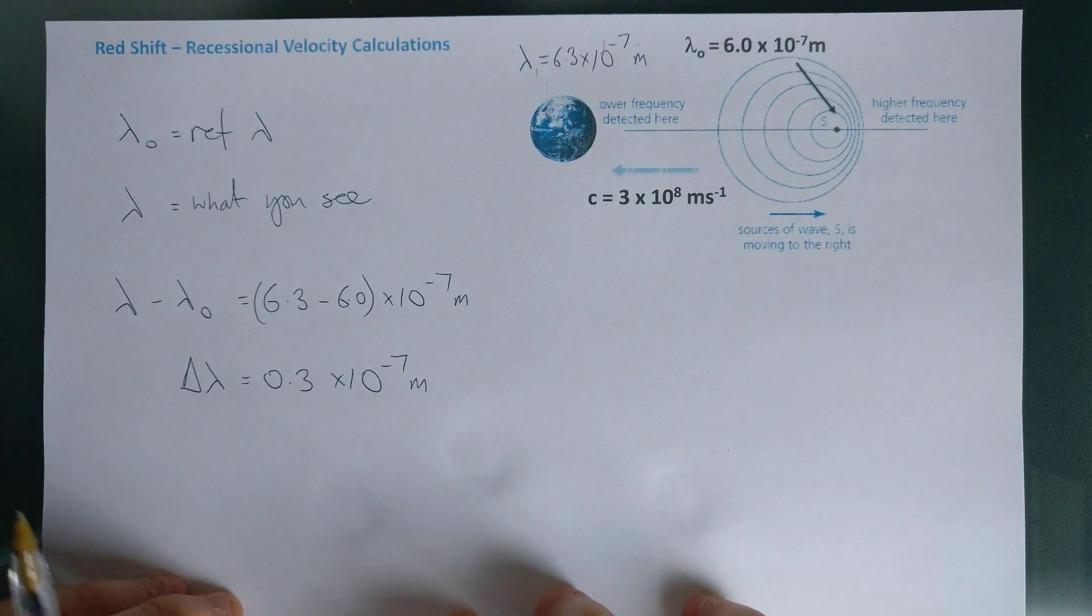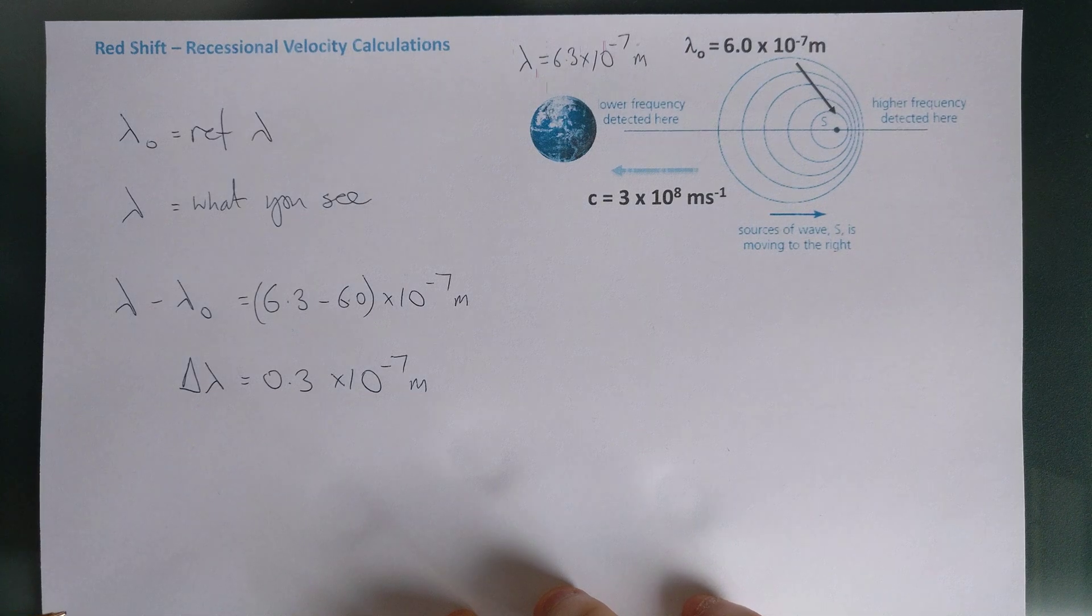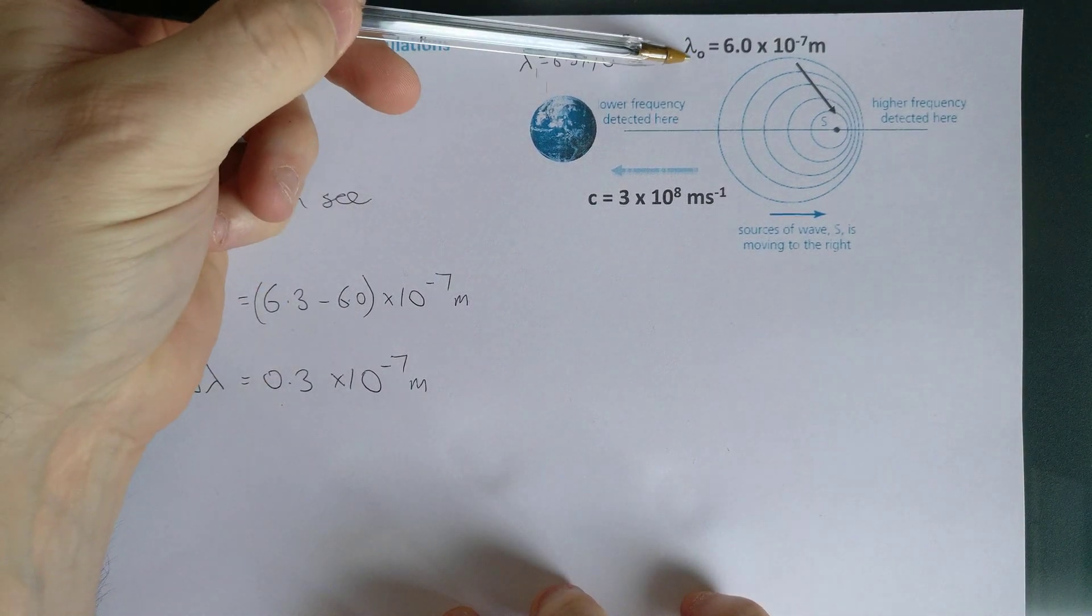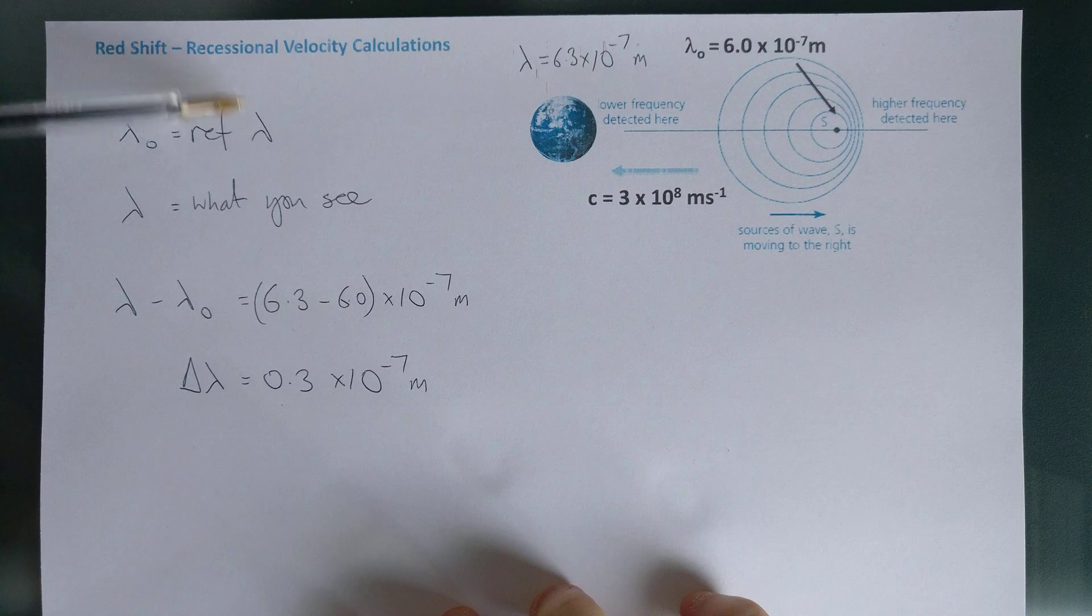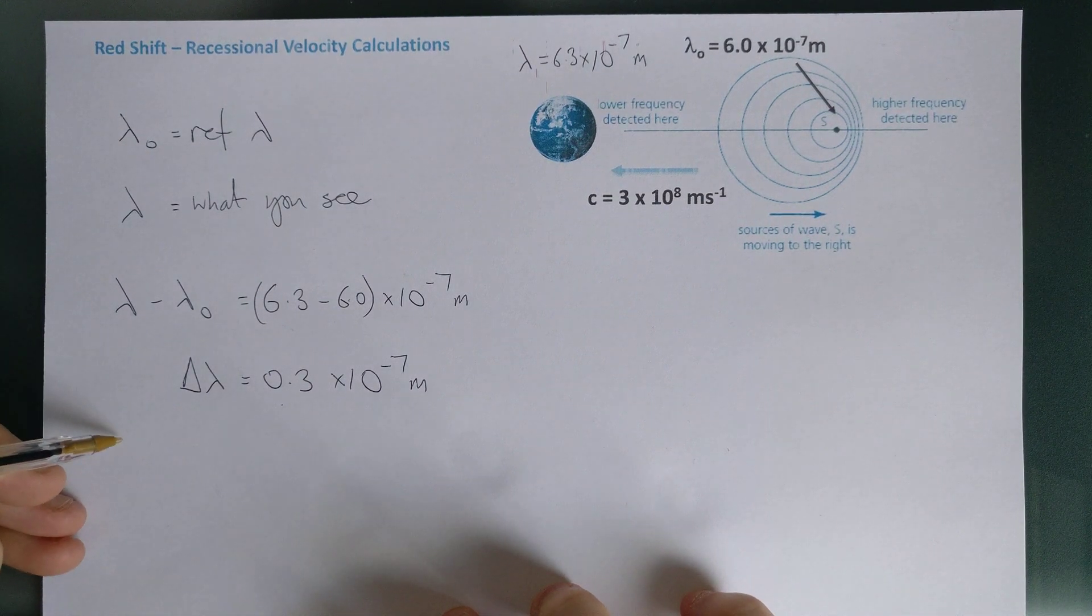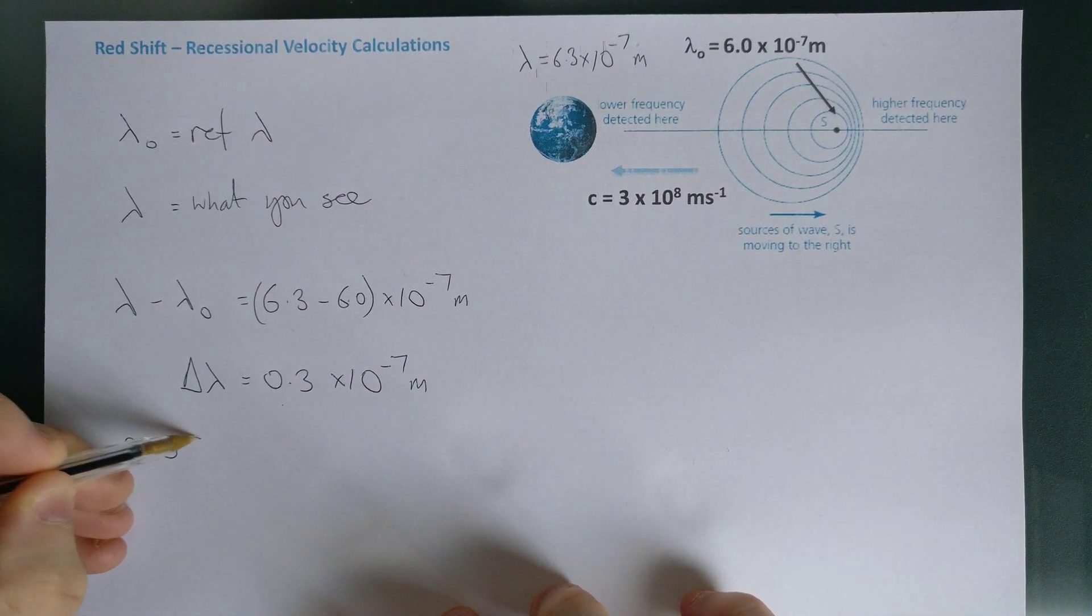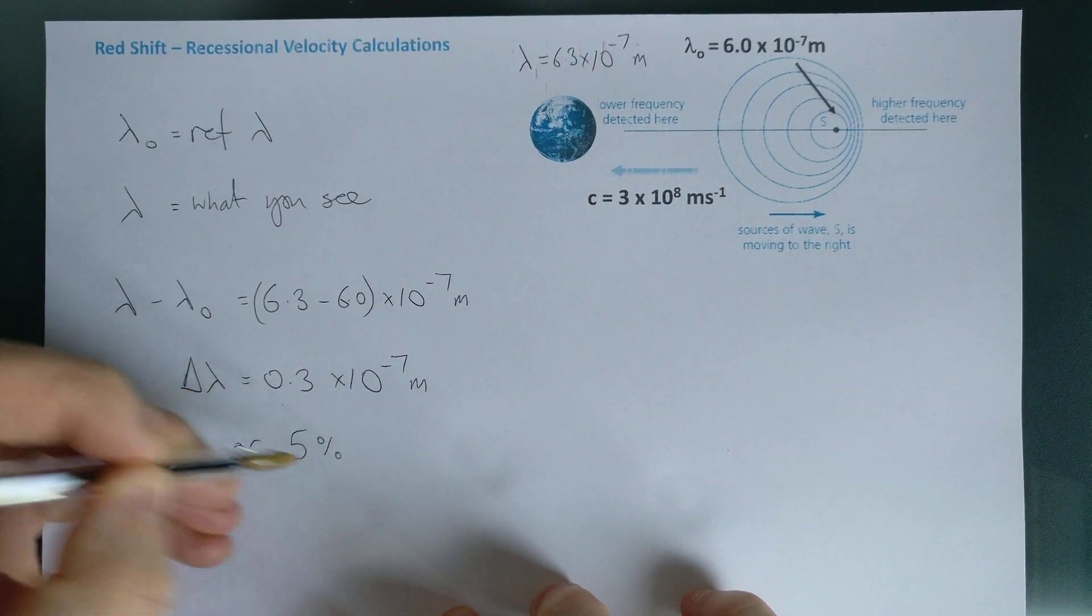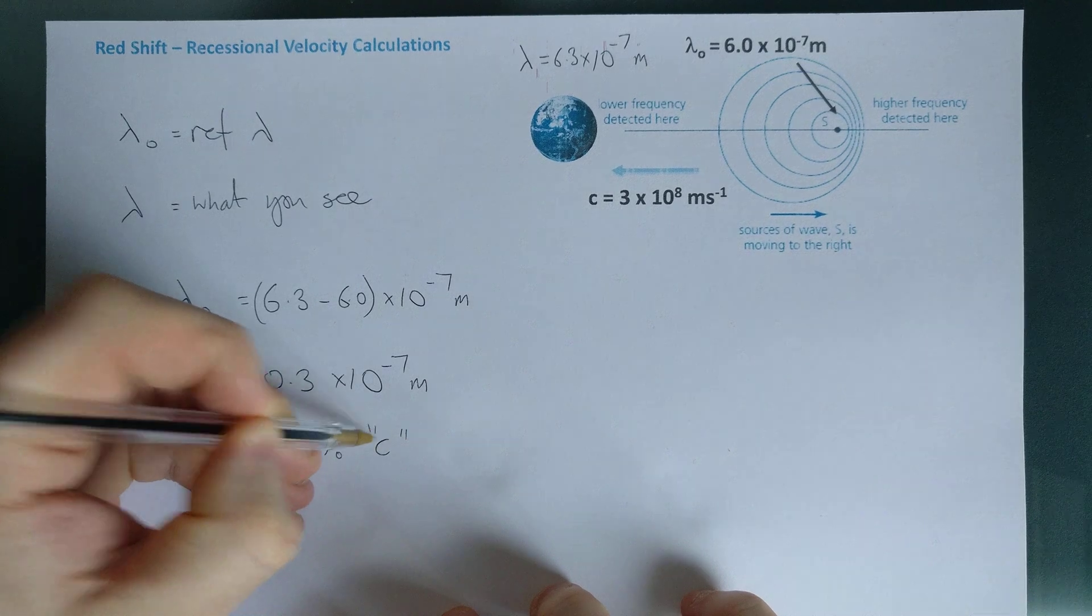Effectively, that's my shift in wavelength. Now you could do a step where then you work out as a fraction. You could do the 0.3 divided by the original, the lambda naught, the reference wavelength, and you could work out that that is effectively a 0.05 or 5 percent of the speed of light c. There's a difference.